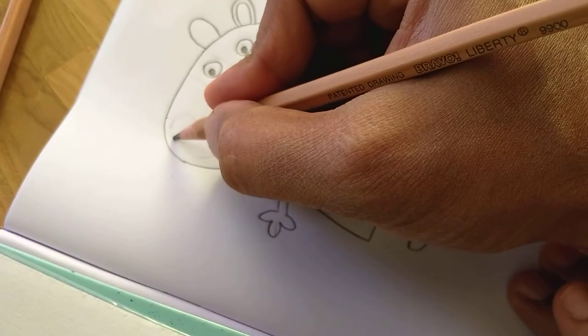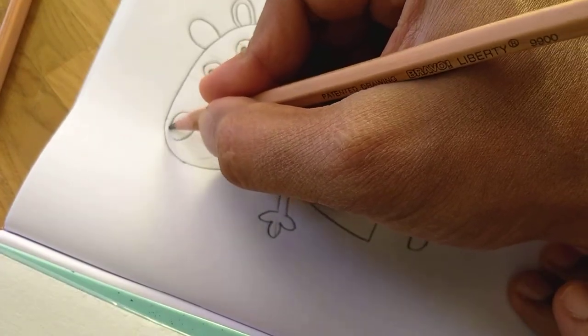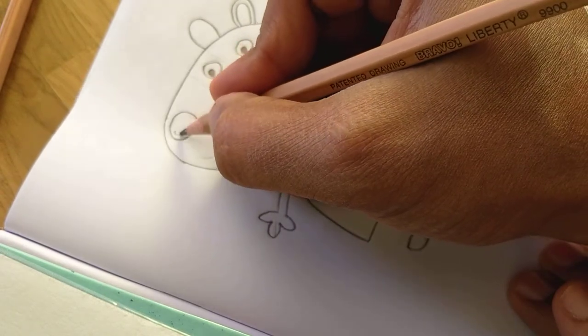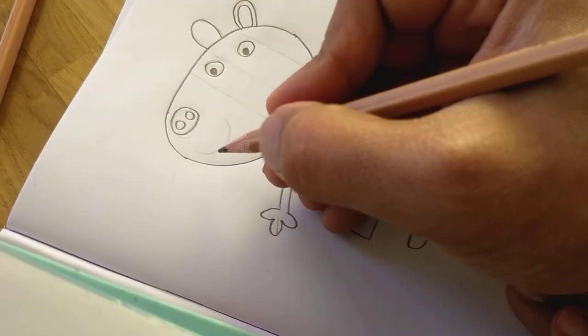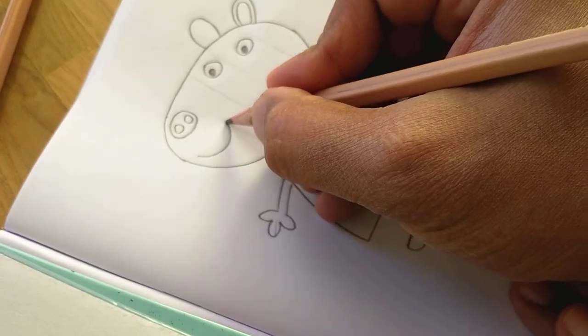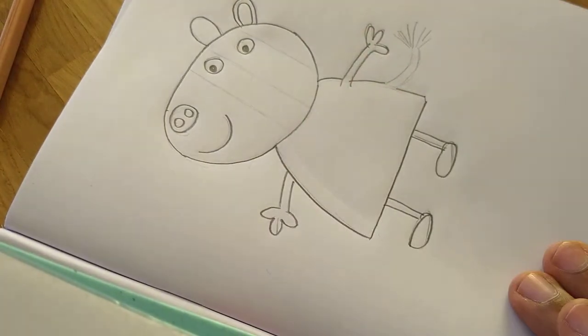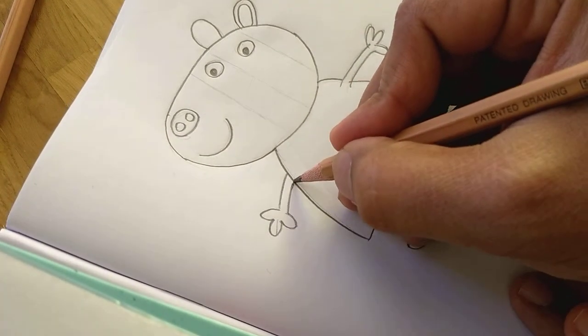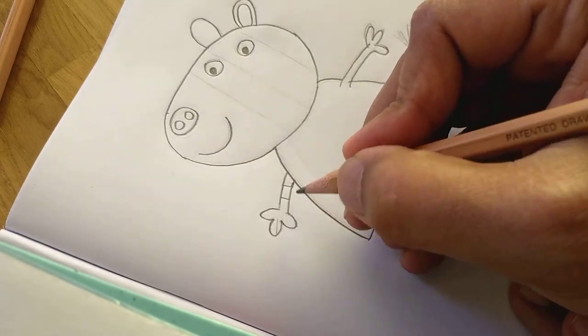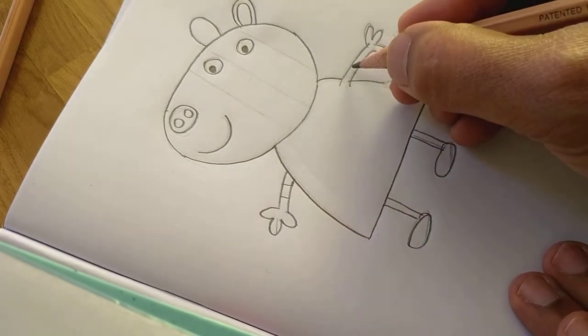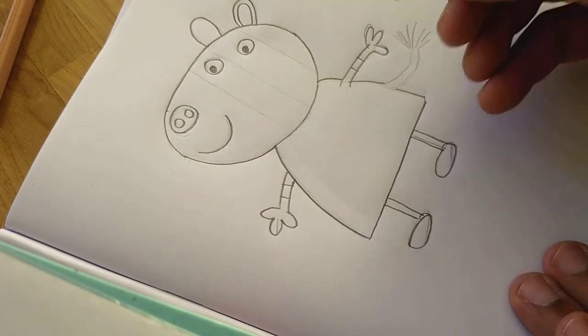Next comes the nose. We have two small circles here. Then the mouth portion, it's smiley. And here you need to make it stripes, as zebra has black and white stripes.